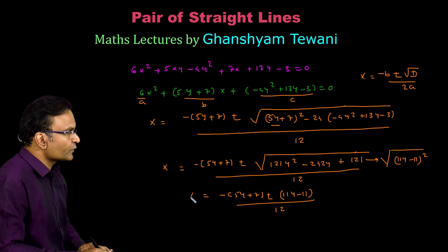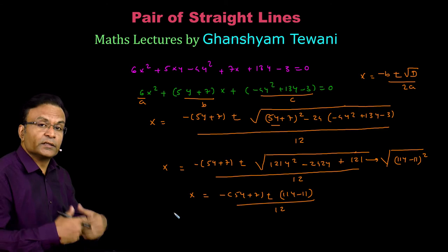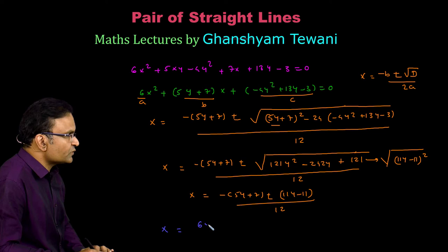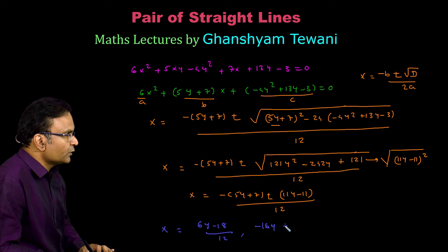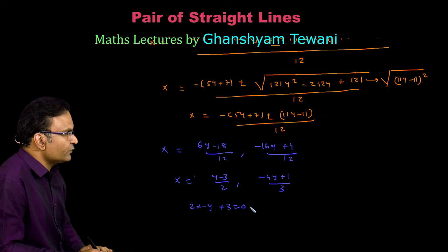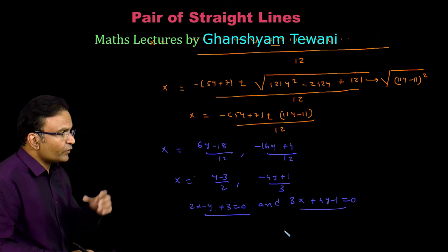We have two values of x as roots in terms of y. Taking the plus sign gives x equals (6y minus 18) upon 12, and taking the minus sign gives x equals (minus 16y plus 4) upon 12. That means x equals (y minus 3) upon 2 or (minus 4y plus 1) upon 3. Therefore the two component straight lines are 2x minus y plus 3 is equal to 0 and 3x plus 4y minus 1 is equal to 0. This is how we find the two component lines when the pair of straight lines equation is given.